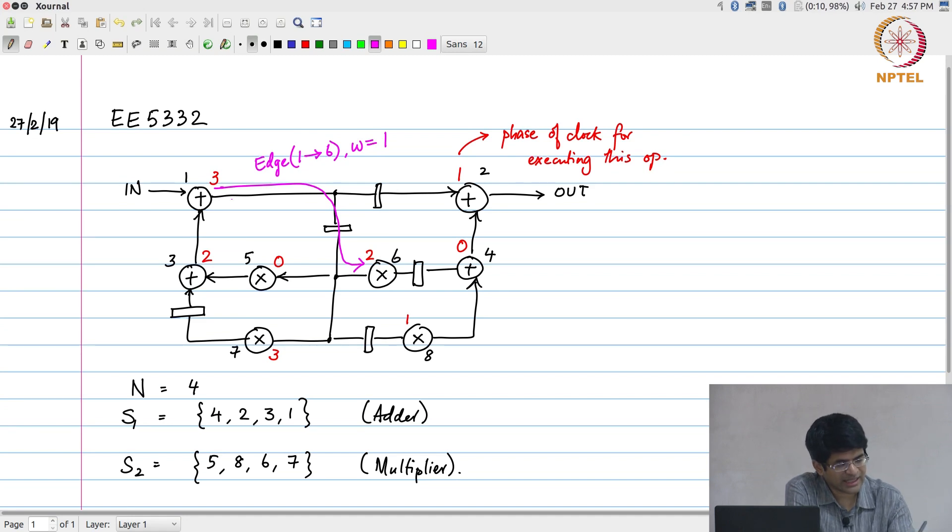Similarly, I have another edge that goes over here. This is an edge from node 1 to node 8 and it has w the number of delay elements equal to 2. Both of these delay elements in other words correspond to this magenta edge that I have drawn over here.